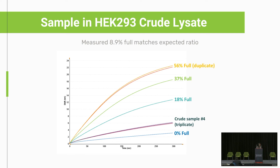Here is an example from a customer demo we just completed, with data provided by the customer. This is their standard curve, and at the bottom you can see their crude samples run in triplicate. The final result is around 9% full, which is as they expected — I believe determined by their existing assay, which is a combination of ELISA and ddPCR.